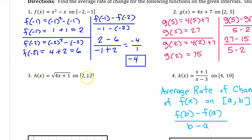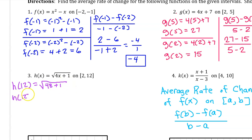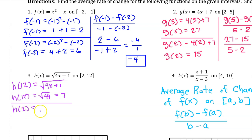To find the average rate of change of h on this interval, we begin by finding h(12). Plugging in 12, we get the square root of 4 times 12 plus 1, which is √49 = 7. Now we need h(2): that's the square root of 4 times 2 plus 1, which is √9 = 3.